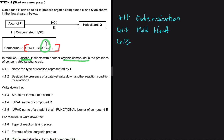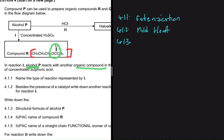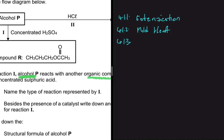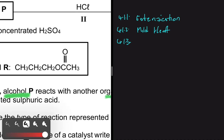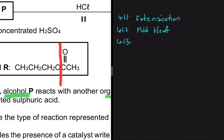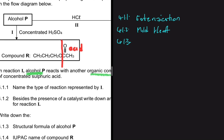For 4.1.3, write down the structural formula of alcohol P. For esterification to take place, alcohol P must be a primary alcohol. Looking at the ester, which is compound R, to find how many carbons were in the alcohol, you put a line between the oxygen and the carbon atom. The part with the double bond comes from the acid, and the other part comes from the alcohol, which has one, two, three carbons — so the alcohol is propanol.